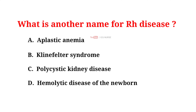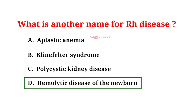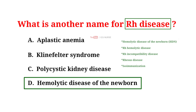What is the other name for Rh disease? A. Aplastic anemia. B. Klinefelter syndrome. C. Polycystic kidney disease. D. Hemolytic disease of the newborn. And the correct answer is D: hemolytic disease of the newborn. Rh disease is also known by other names, including hemolytic disease of the newborn and Rh hemolytic disease.